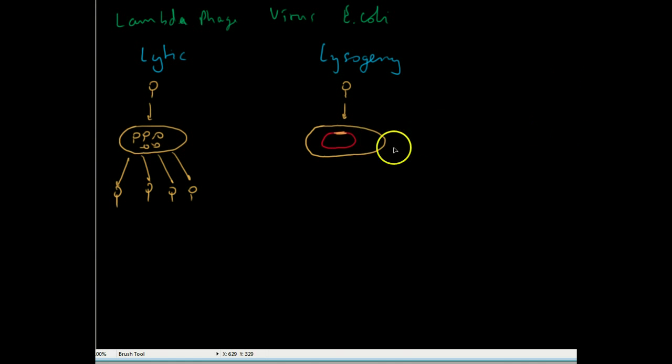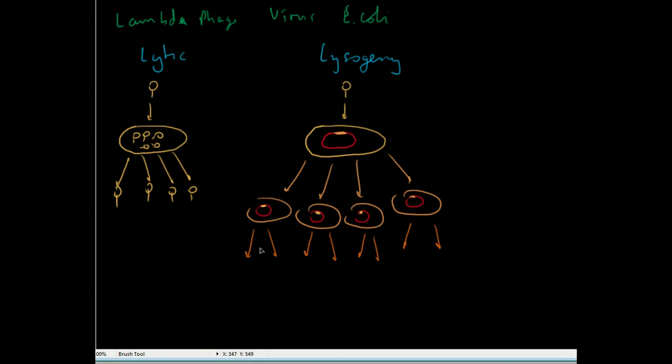And E. coli is not really aware of this and it'll carry on replicating as if nothing had happened. So we'll have lots of new E. coli's but they will all carry the Lambda Phage genome that's embedded in the E. coli genome. And E. coli can continue replicating like this many times. Lambda Phage is essentially in a dormant phase. This can go on for many generations.